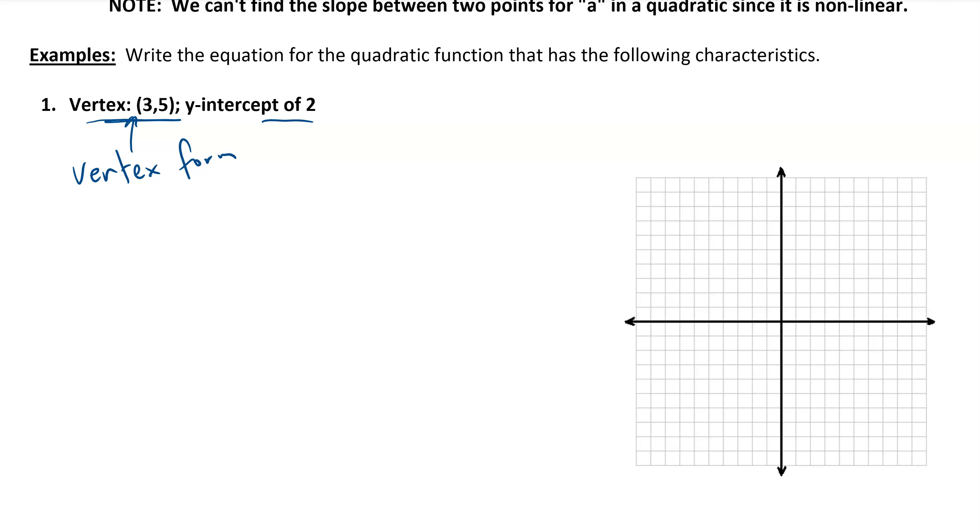So I want to fill in values for a, for h, and for k to create my quadratic function. Well, obviously, since we know the vertex, I can fill in that information. I have y equals a(x minus 3) squared plus 5. We'll place the vertex at (3, 5).